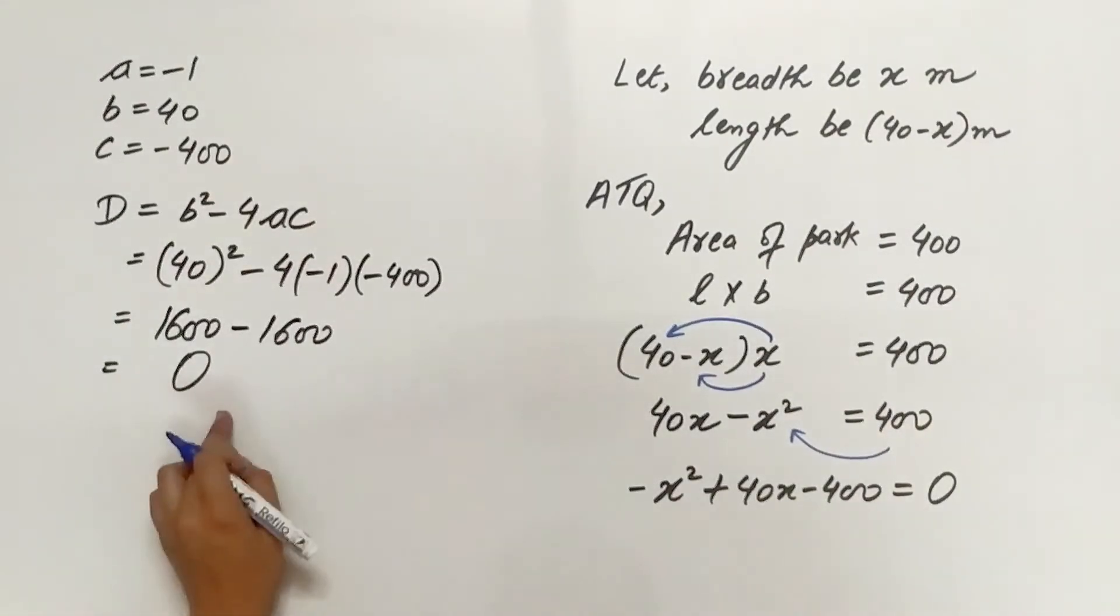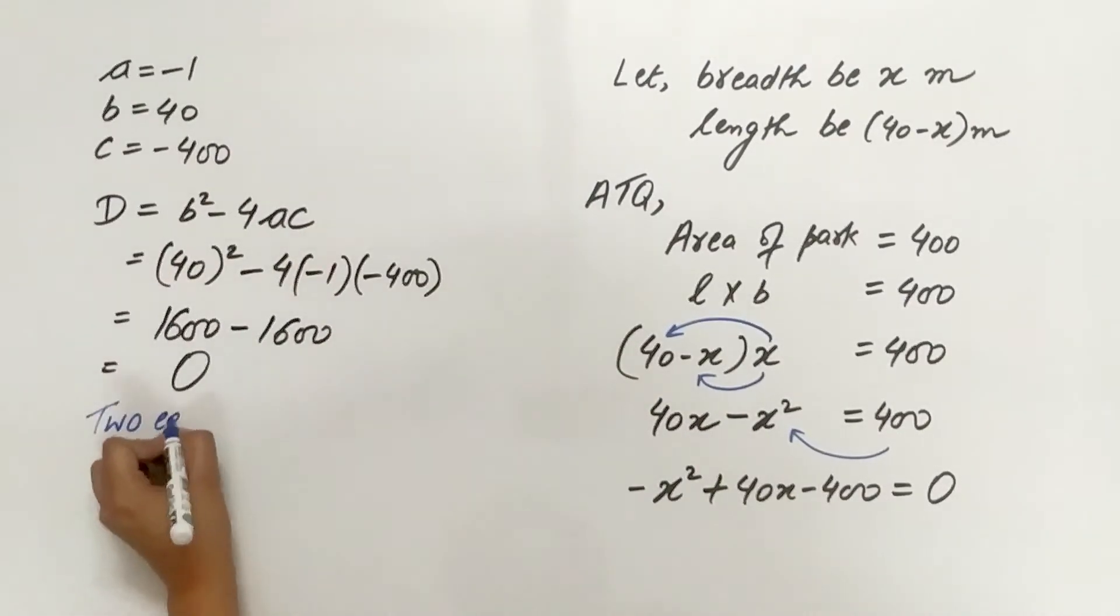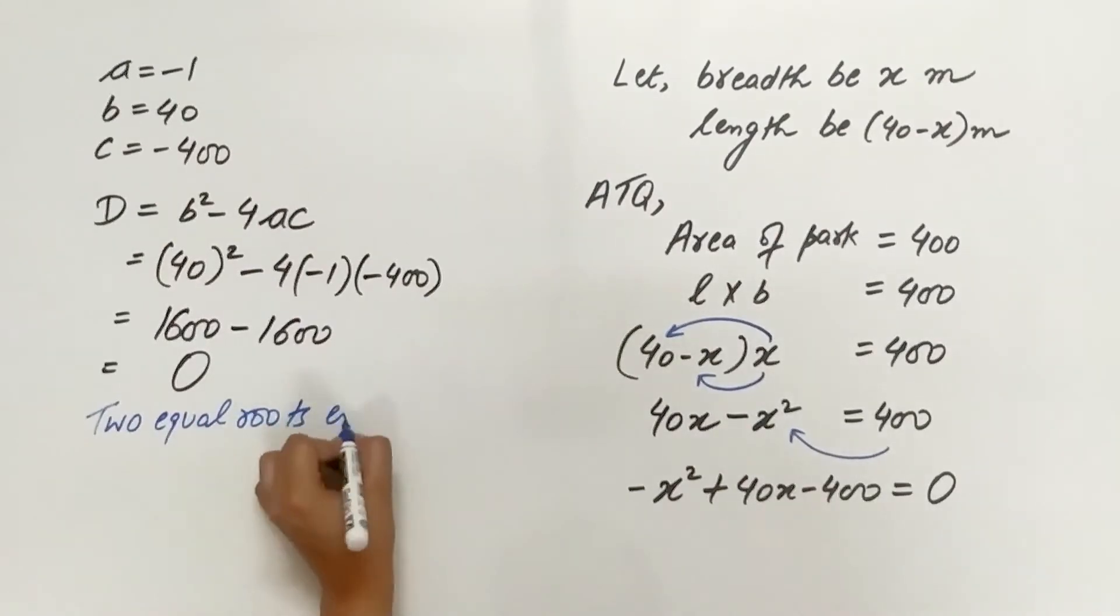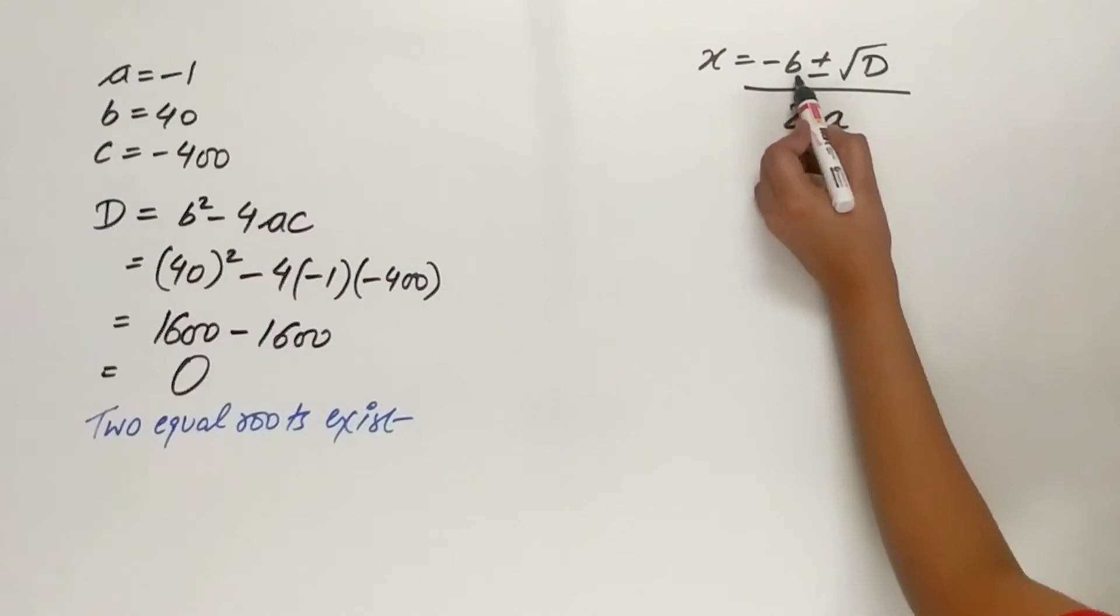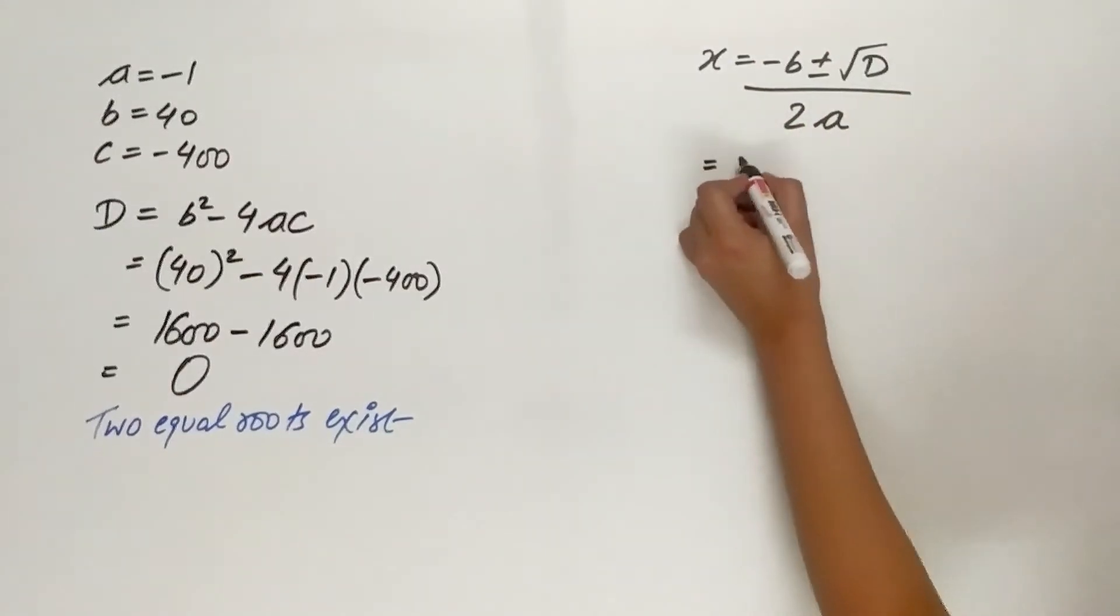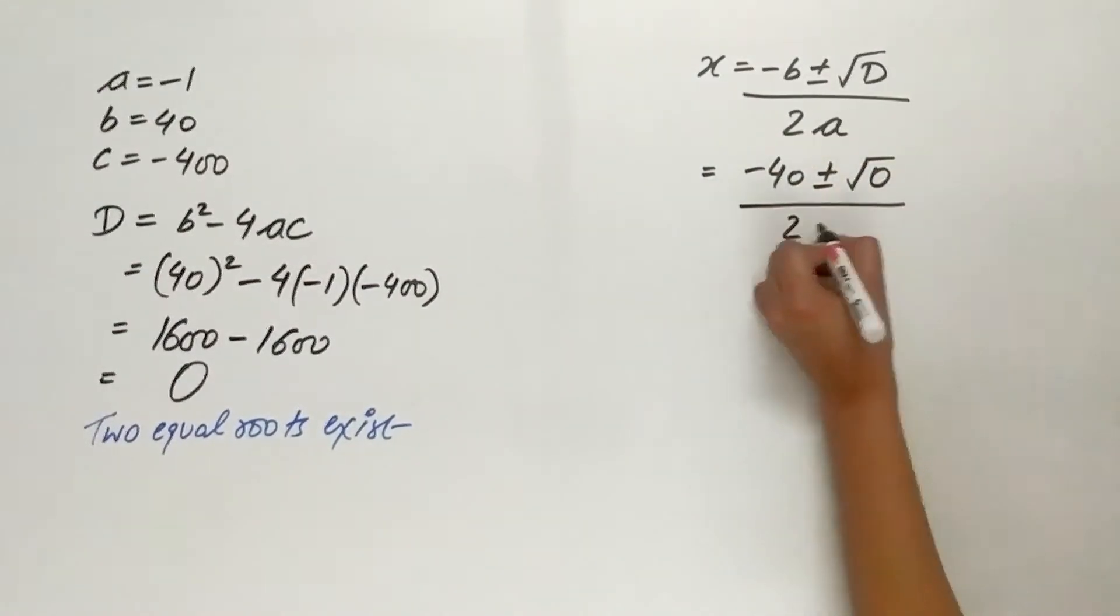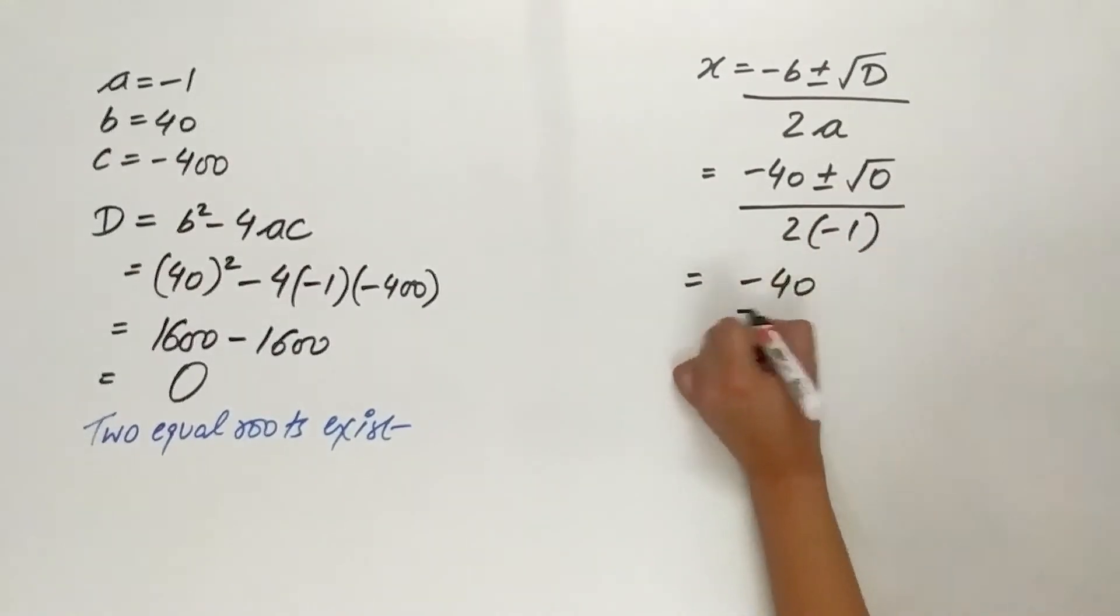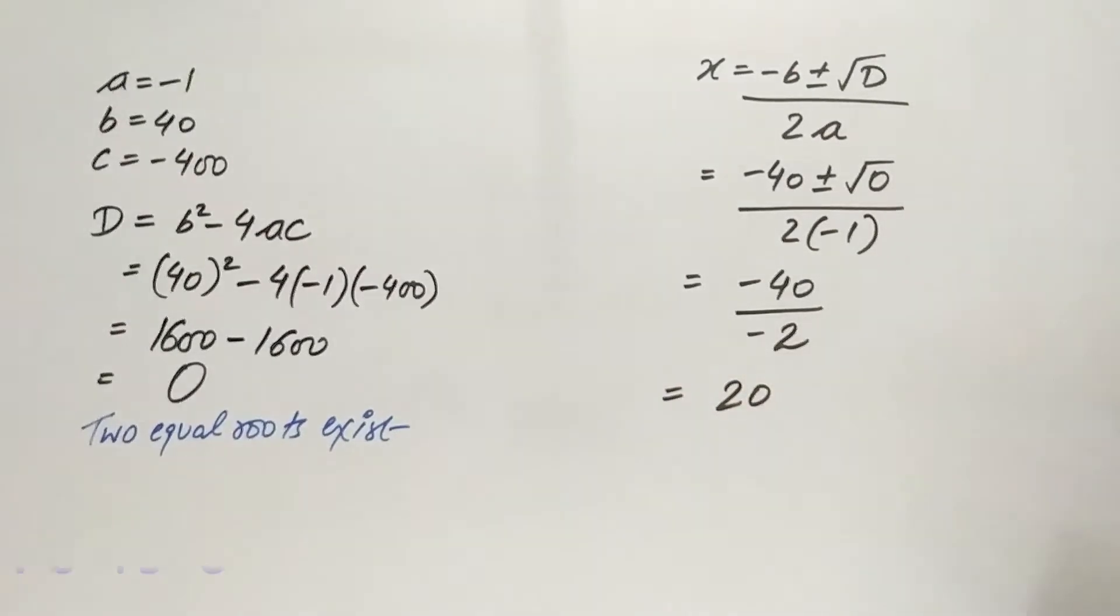Since D equals 0, two equal roots exist. x equals negative B plus minus square root of D divided by 2A. Negative 40 plus minus square root of 0 divided by 2 multiplied by negative 1. Negative 40 divided by negative 2 equals 20.